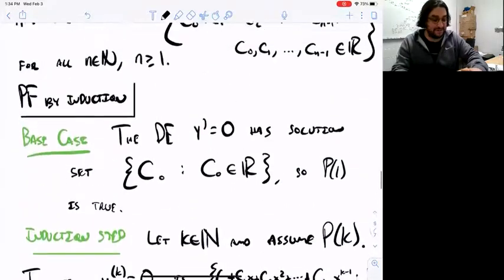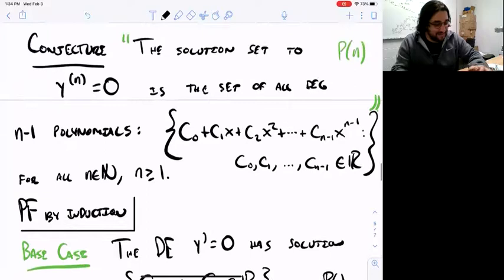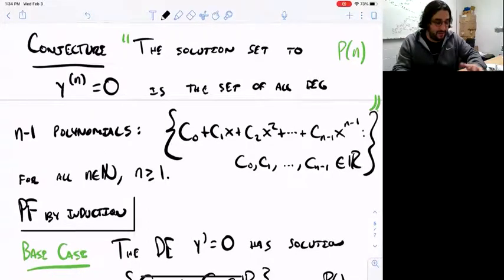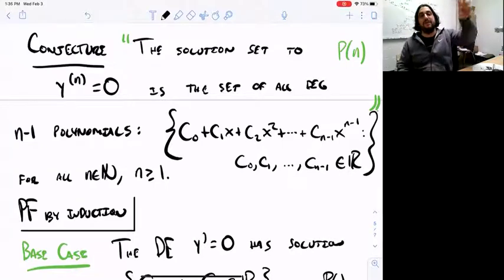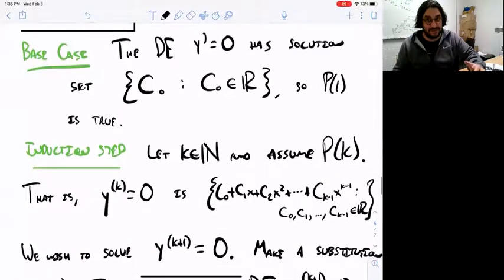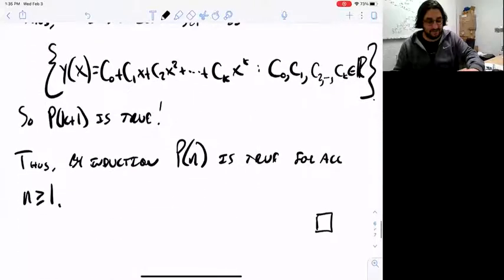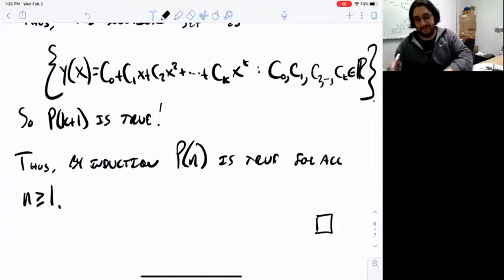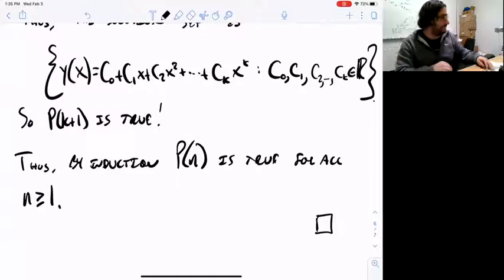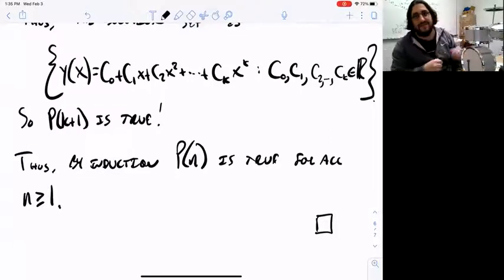So P of K plus 1 is true, and it followed from P of K. Our induction step is complete, and by induction P of N is true for all natural numbers N greater than or equal to 1. Zero didn't quite fit the pattern, which is why our base case was set at 1. The proof is complete. We solved an infinite family of differential equations — not just one, but infinitely many — with only a finite amount of work: a base case and an induction step. Solving infinitely many differential equations in just two steps — that certainly calls for a victory drum solo.